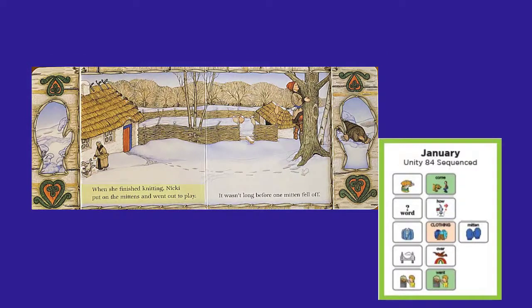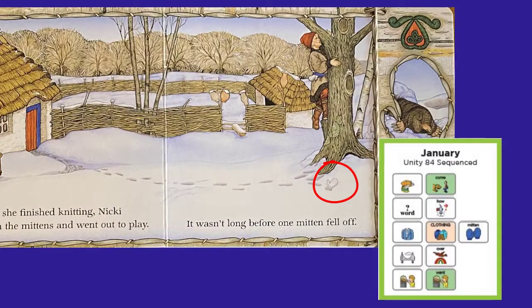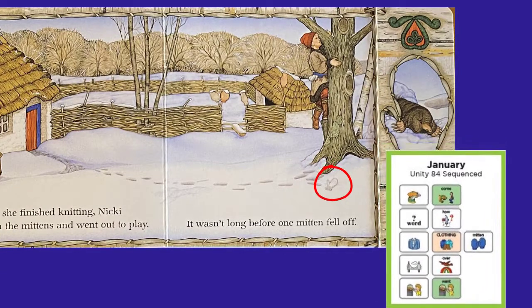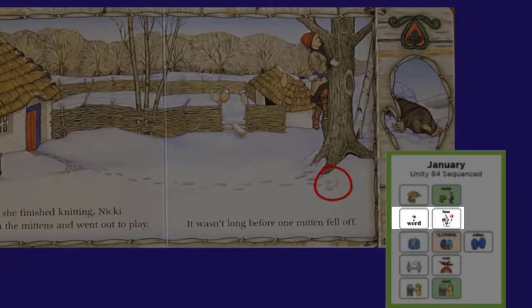When she finished knitting, Nicky put on the mittens and went out to play. It wasn't long before one mitten fell off. Do you see the mitten? It's laying in the snow — it's a white mitten, it's really hard to see. I wonder how it fell off.